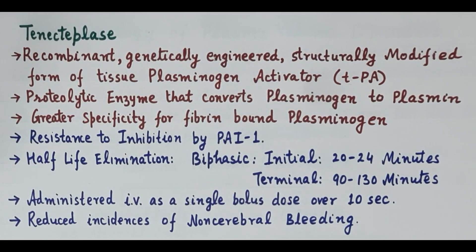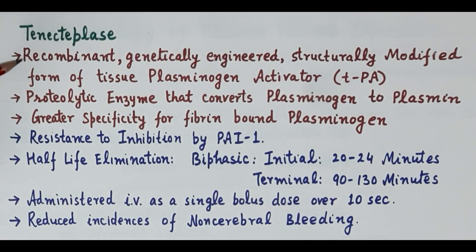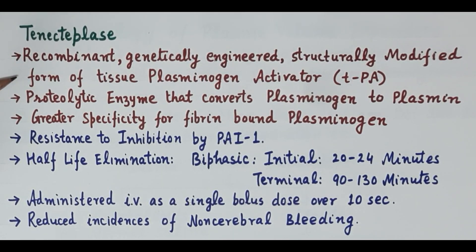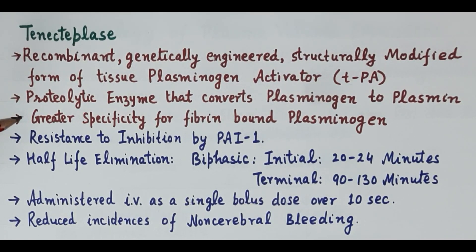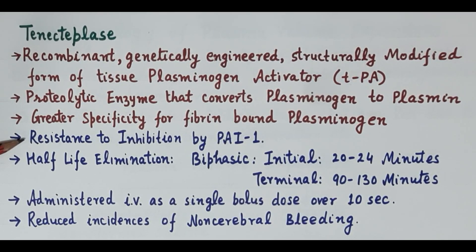Tenicteplase is another recombinant tissue plasminogen activator produced by recombinant DNA technology. It is a genetically engineered, structurally modified form of tissue plasminogen activator. Tenicteplase is a proteolytic enzyme that breaks plasminogen to plasmin, thereby breaking the fibrin network and dissolving the clot. Compared to alteplase, tenicteplase has greater specificity for fibrin-bound plasminogen, resulting in reduced incidences of non-cerebral bleeding. Unlike alteplase, it also exhibits resistance to inhibition by plasminogen activator inhibitor 1, and thus has a longer half-life.